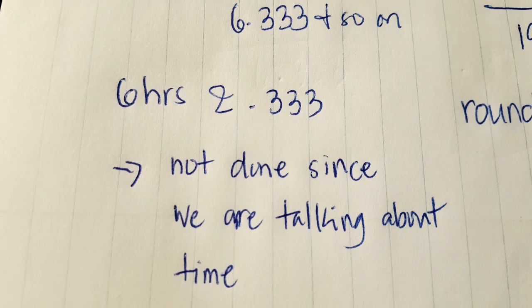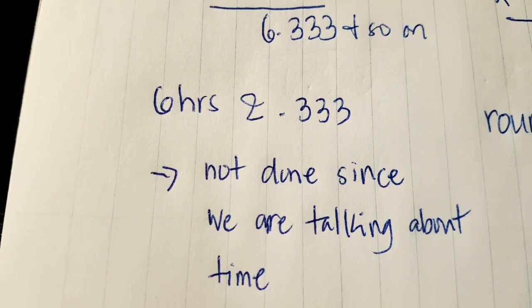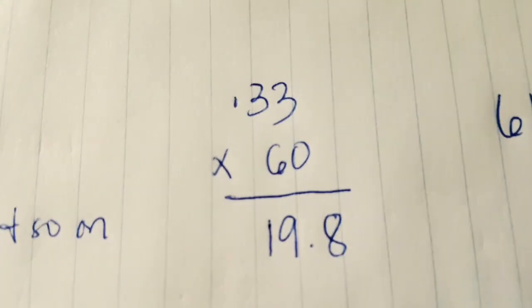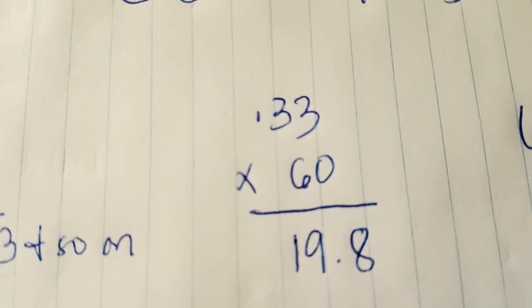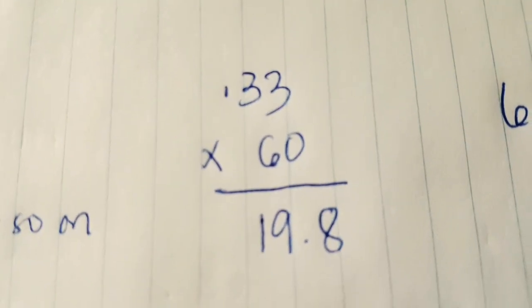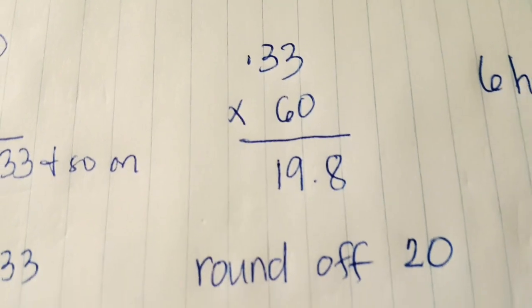We have to multiply that by 60 because in an hour there are 60 minutes. So we take the 0.33, two digits, times 60 equals 19.8, and then we round it off to 20.